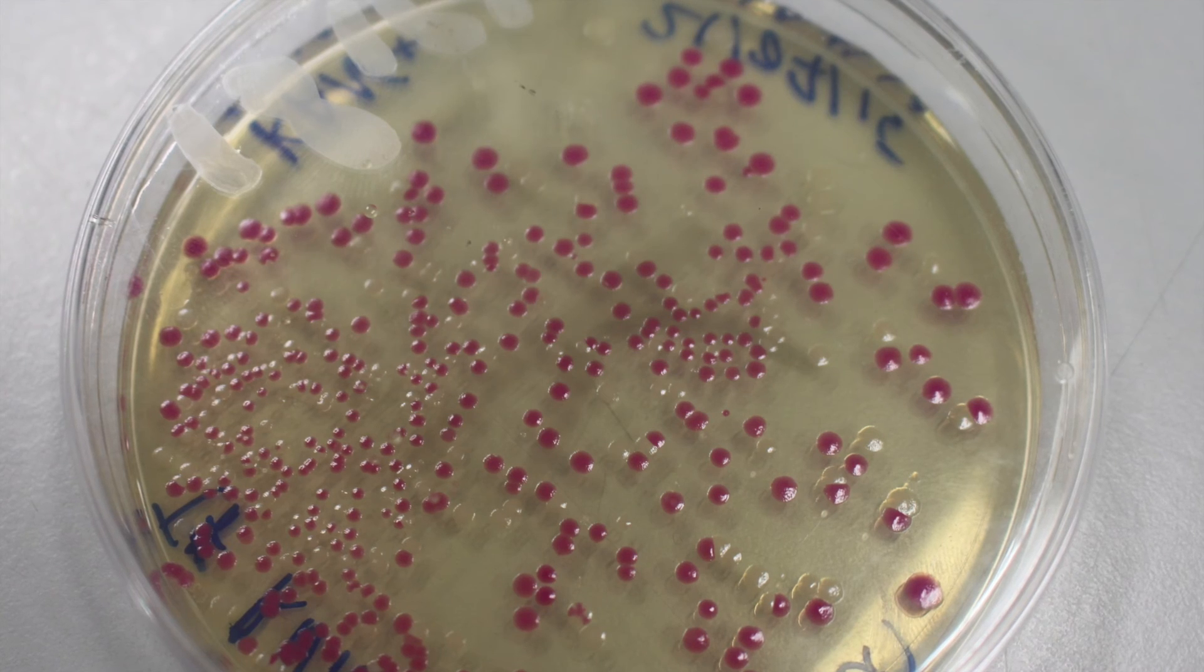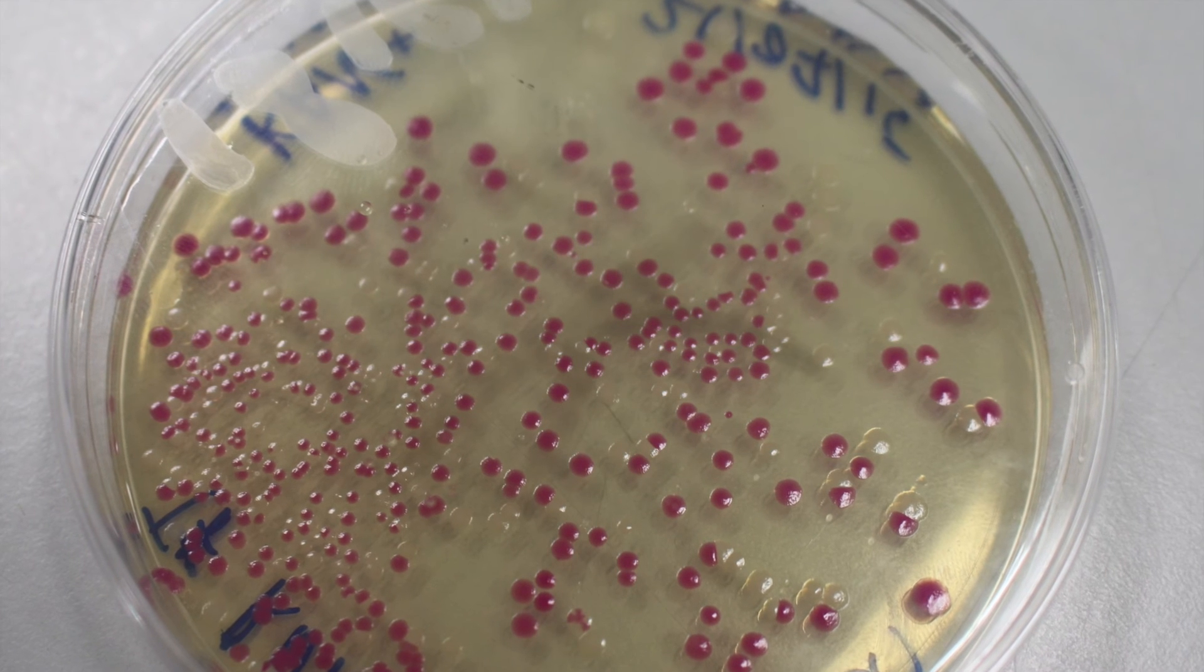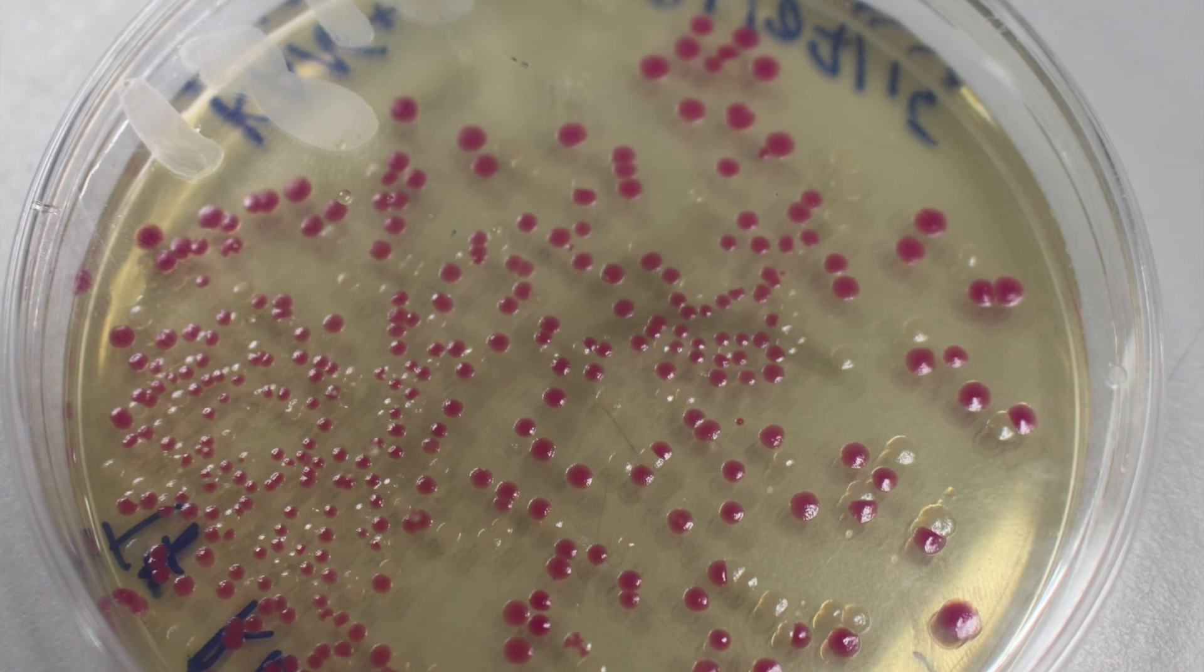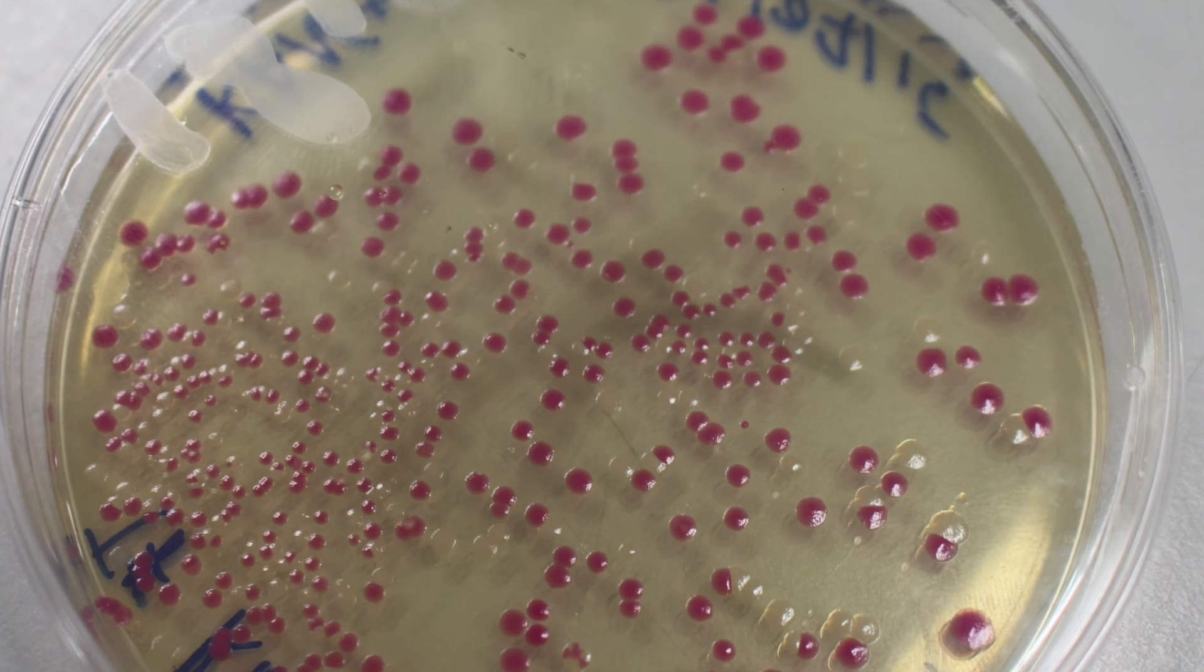The cells have now been transformed. PCR can be carried out in order to confirm part size. Glycerol stocks can be made with these cells and stored at minus 80 degrees Celsius.